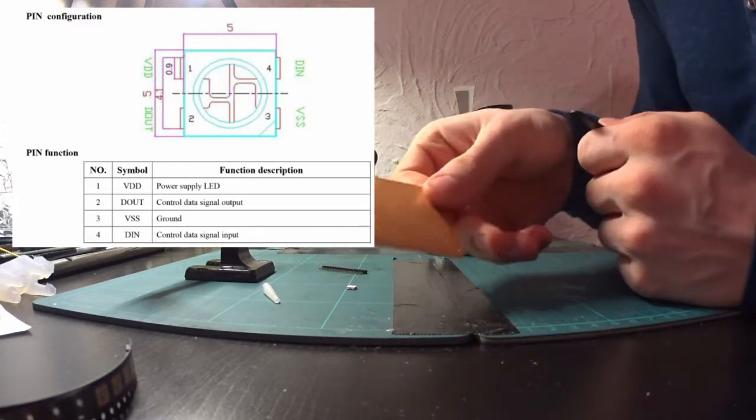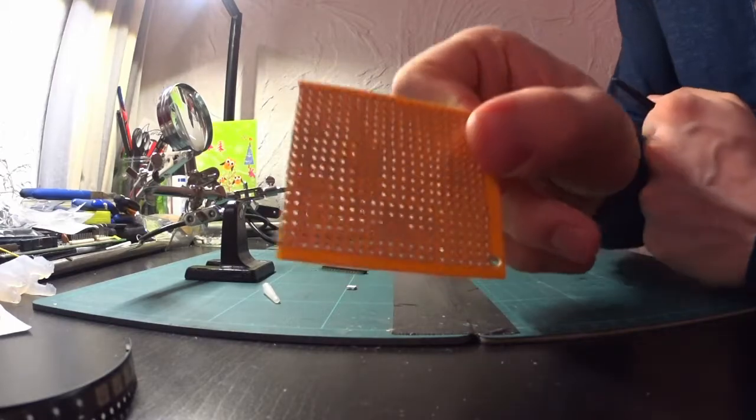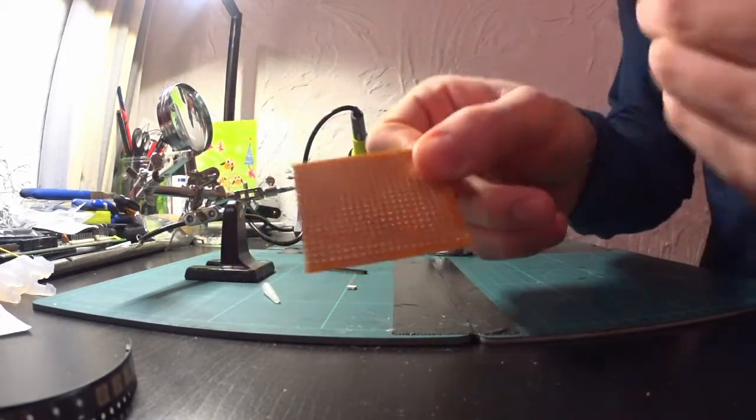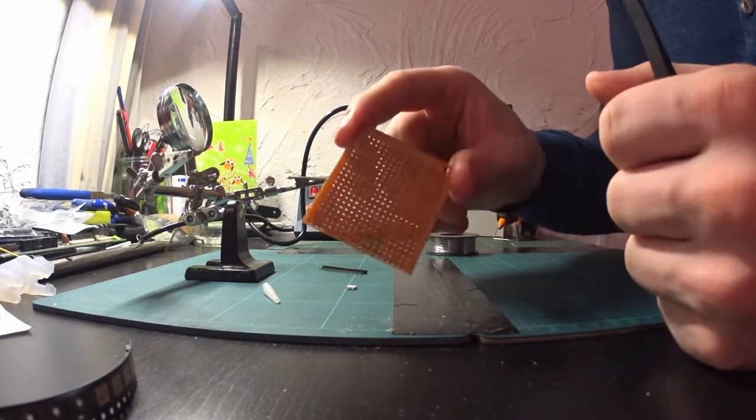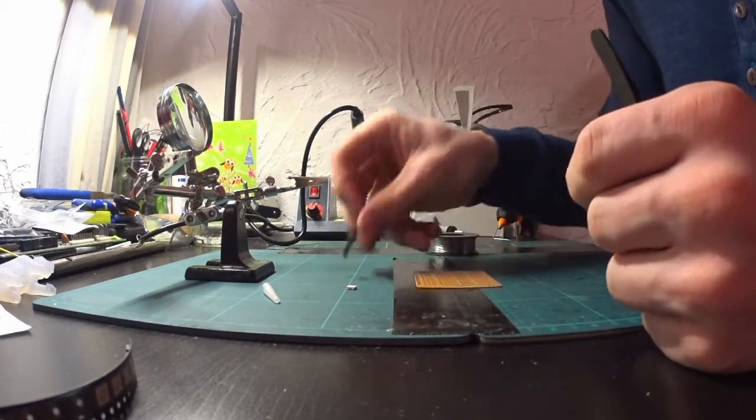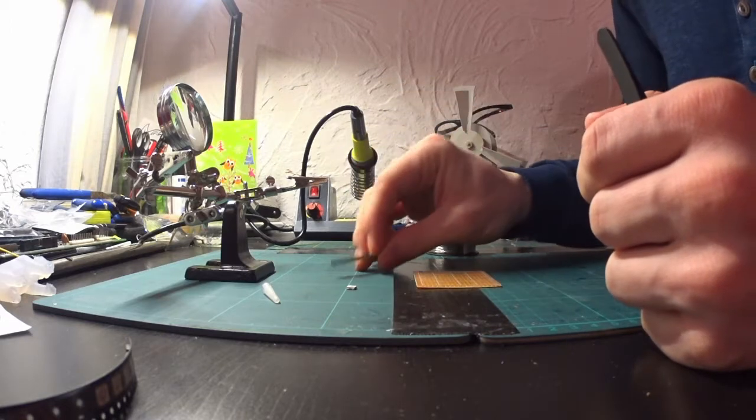What I also used was this kind of perfboard. You can see it has a lot of holes in it and there are copper traces over here. And it's quite a standard thing. And some pin headers of course - we want to put it in our breadboard.